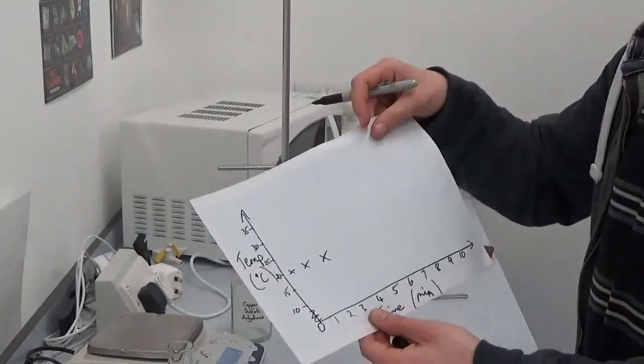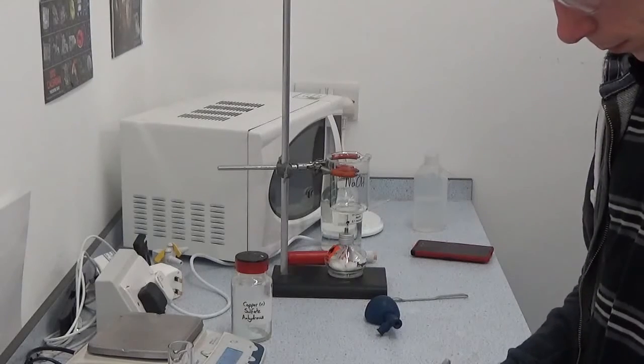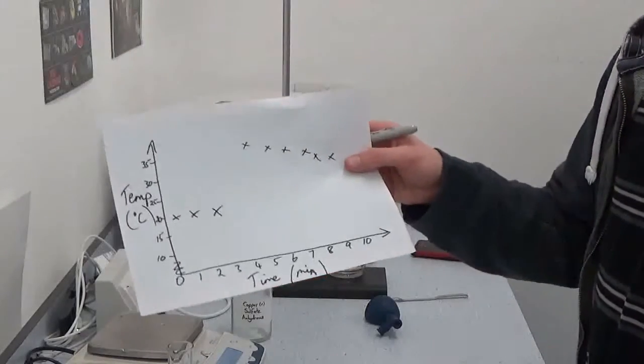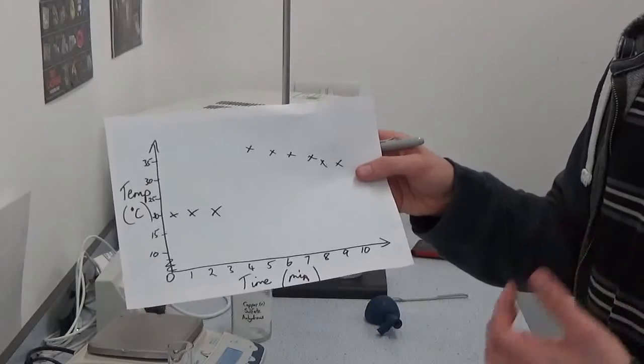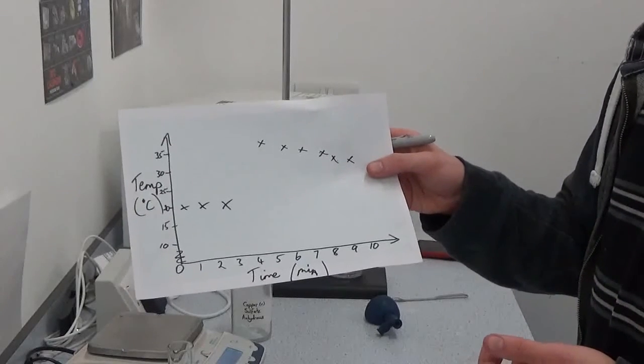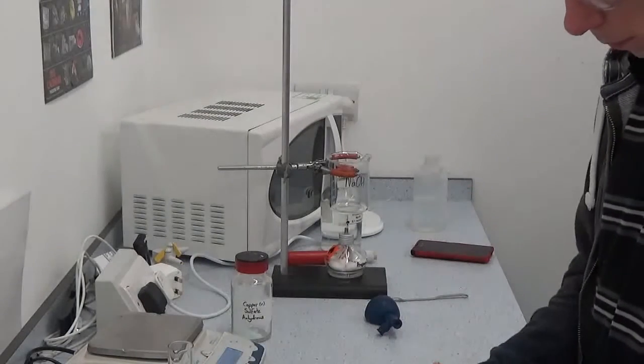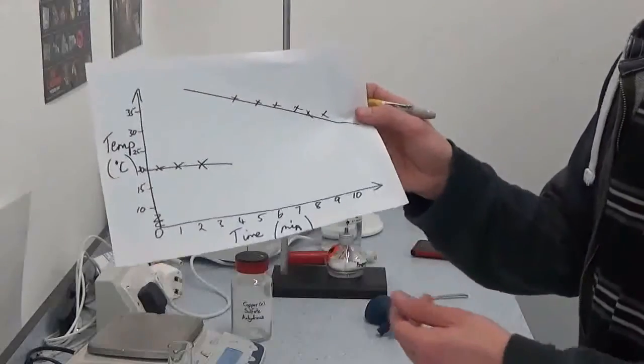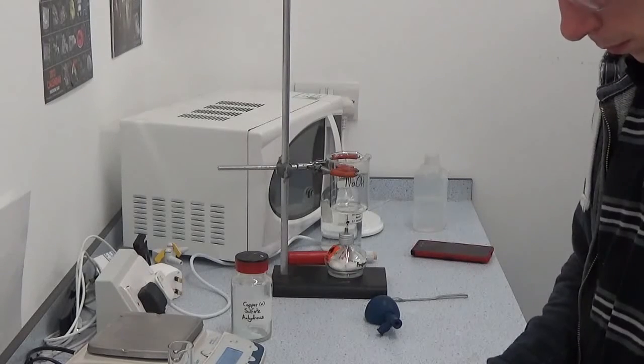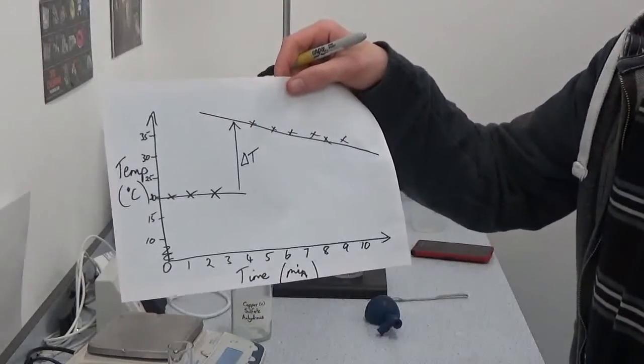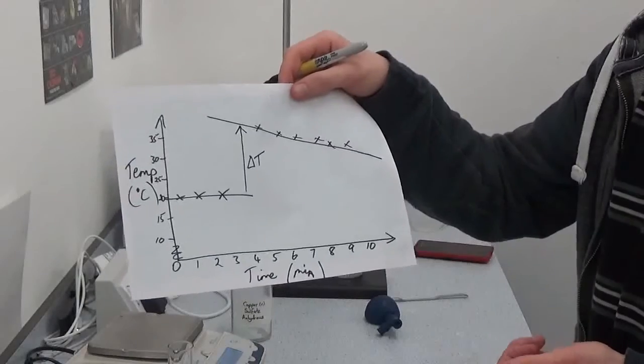Fourth minute do not record anything. So fifth, sixth, seventh, eighth, ninth, tenth, etc. onwards record your temperatures on there. We now need to extrapolate the lines of best fit. So extrapolate just means continue on. The reason we do that, that change there, we can now work out the temperature change at the fourth minute. And that's what you'll use in the Q equals MC delta T calculation.